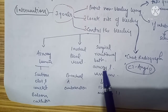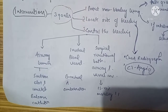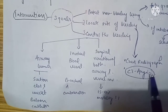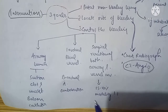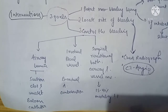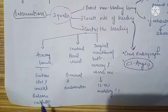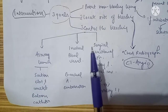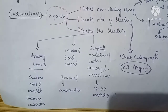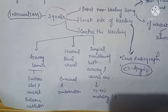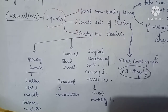Surgical resection of both the airway and vessel is the last resort because it carries a high mortality of 15 to 40%. So the options are: go through the airway to suction and insert a balloon catheter, embolize via the blood vessel, or perform surgical resection — which carries high mortality.